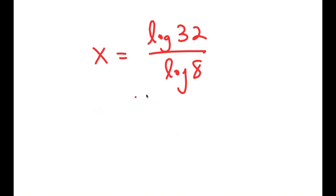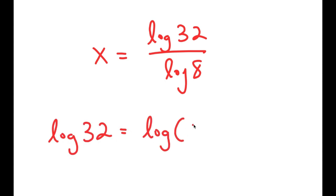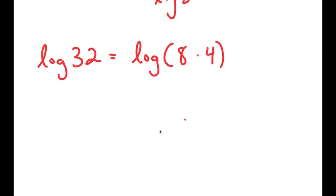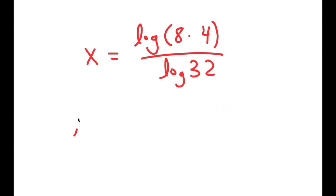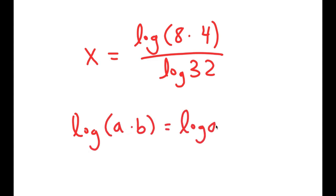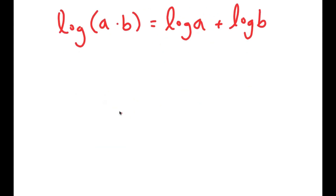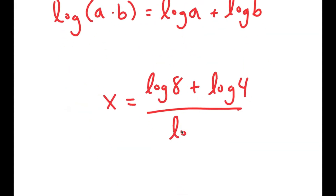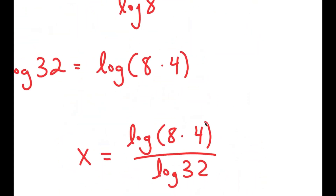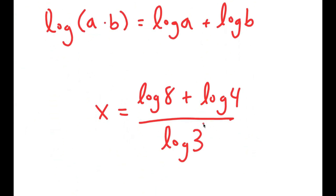Now, log of 32 is the same thing as log of 8 times 4. So I get log of 8 times 4 over log of 8. And if I have something in the form log of a times b, this is equal to log a plus log b. So this is going to equal log of 8 plus log of 4, all over log of 8.